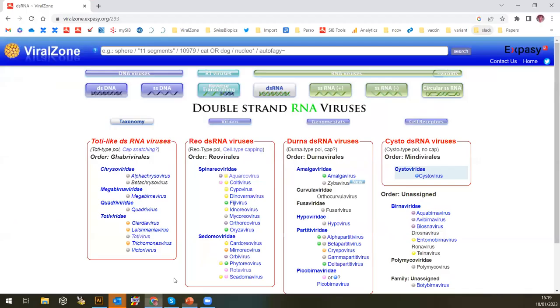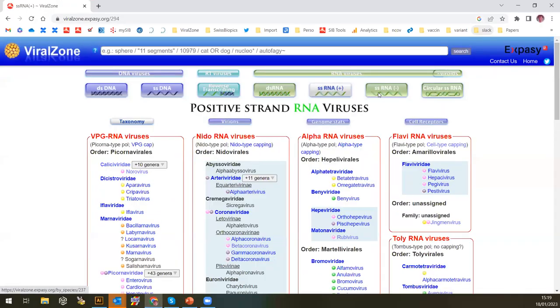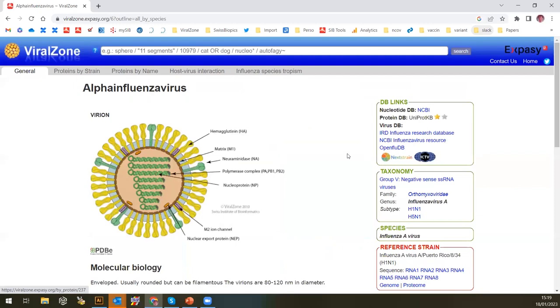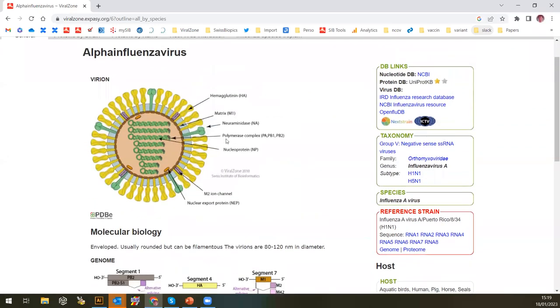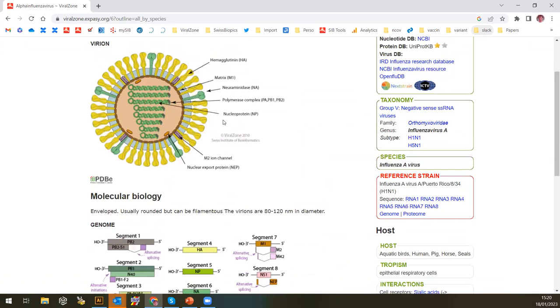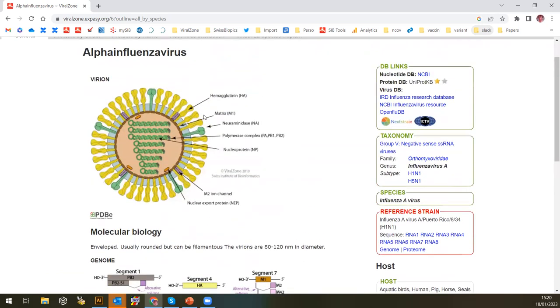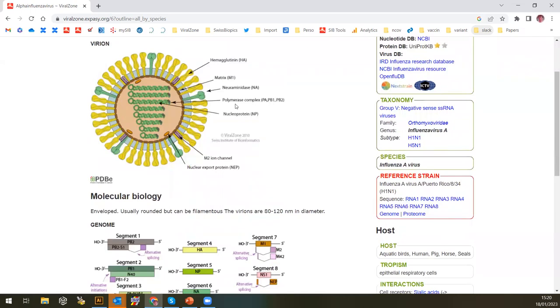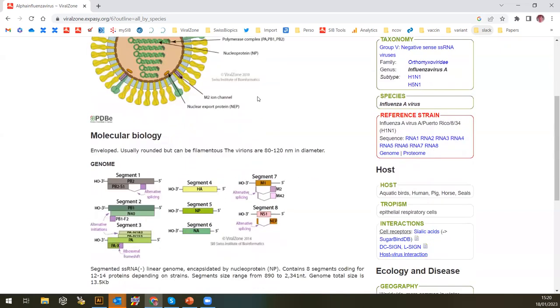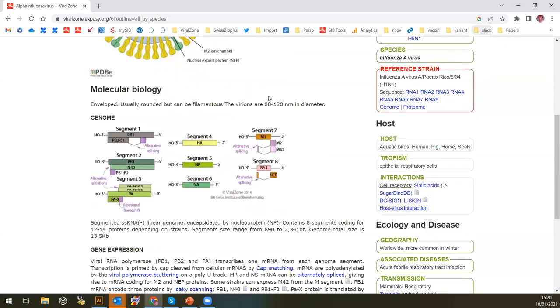If we go back to the ViralZone website, let's take the alpha influenza virus. You see you have a virion description. These are pictures—I will tell you more about that later—but all the pictures in ViralZone are completely free to be used by everybody without even having to ask for permission. It's a Creative Commons, CC-BY, so we just ask that if you use a picture, whatever you want, you cite the source. That's it. It's completely free.